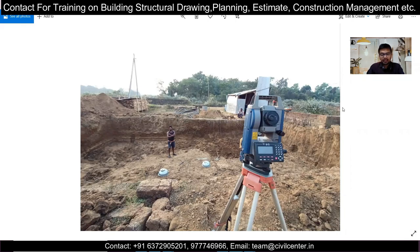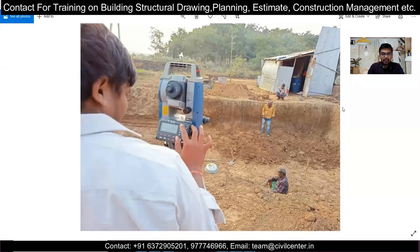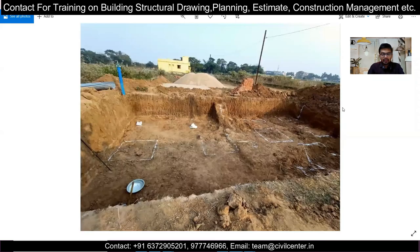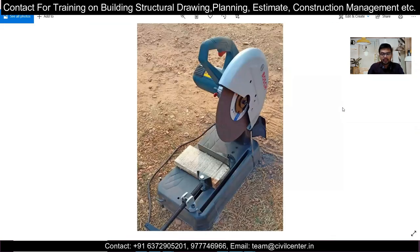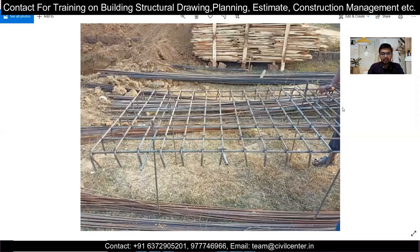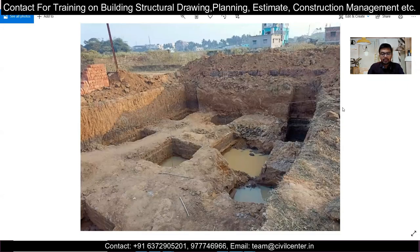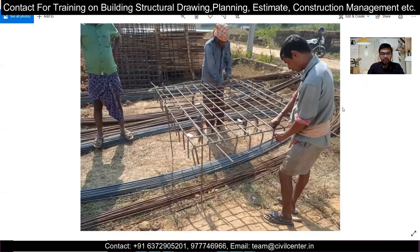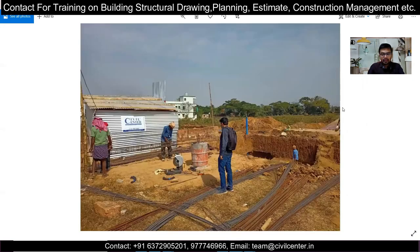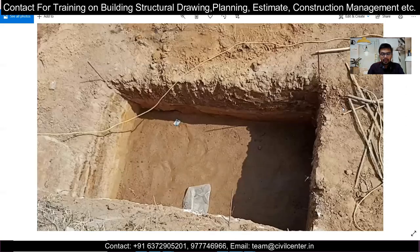First of all, the planning is done, the architectural plan is made, the structural drawing is done, and after that the marking of the footing is done. The marking can be done manually or using total station. As you can see in this picture, marking has been done, and once the footings are marked, the excavation will start. Parallel to the excavation, the rebar cutting and binding was also underway.